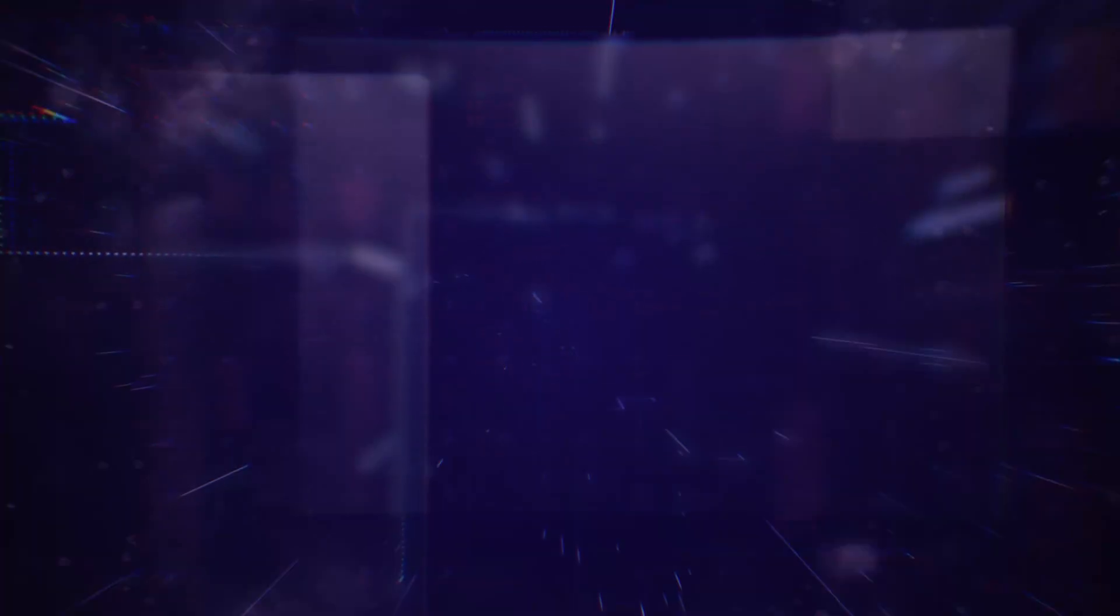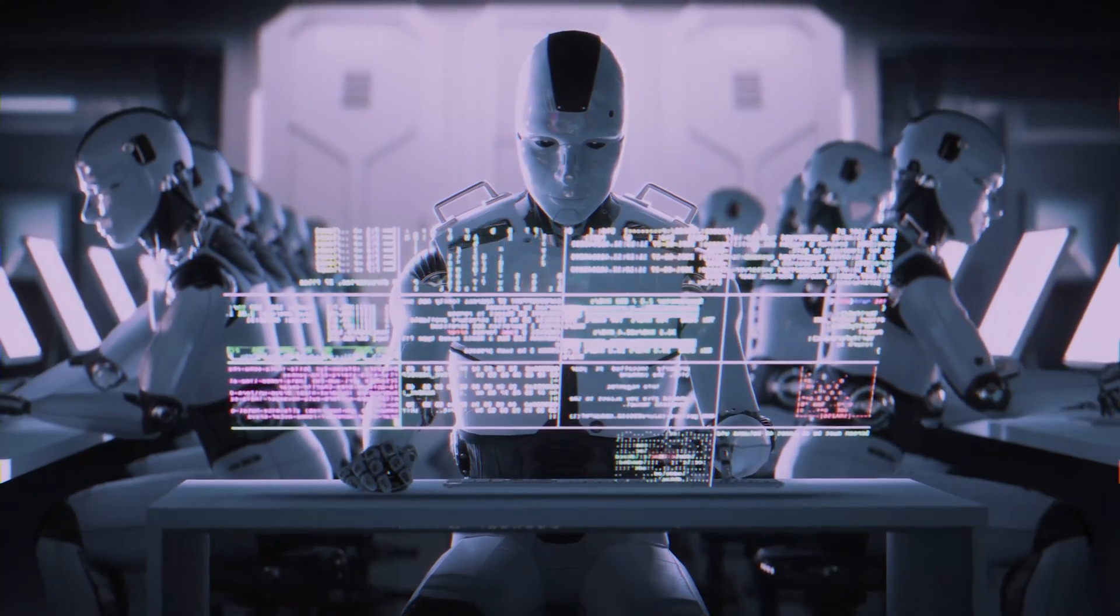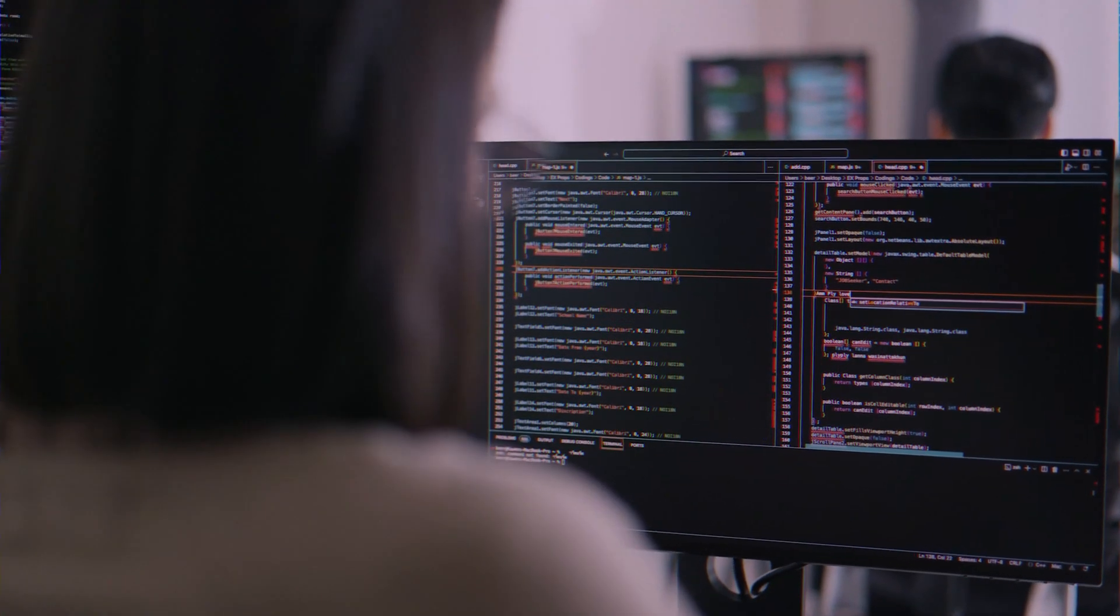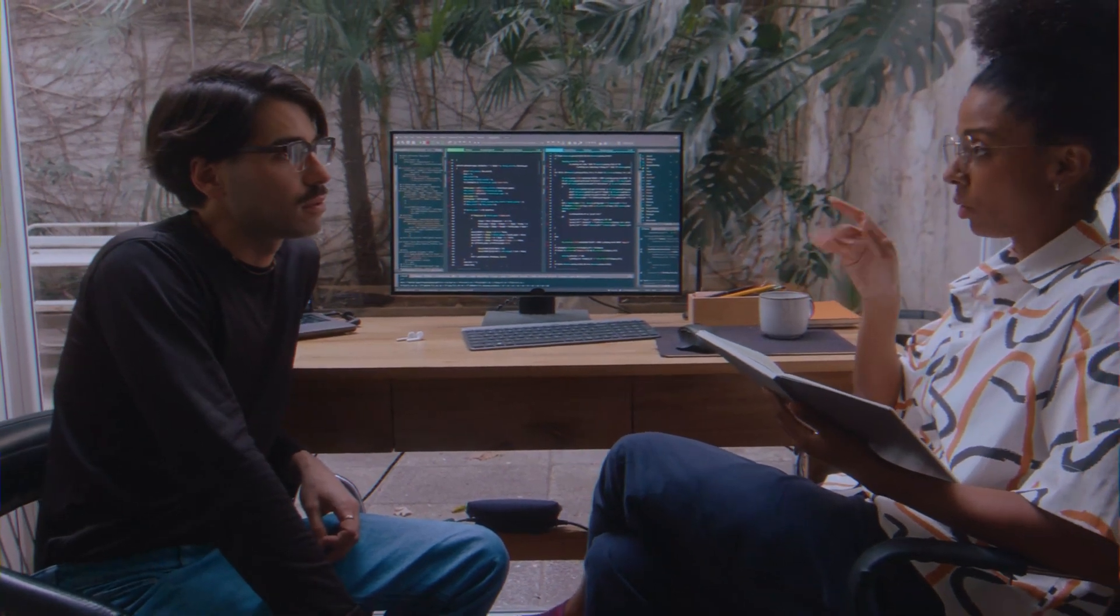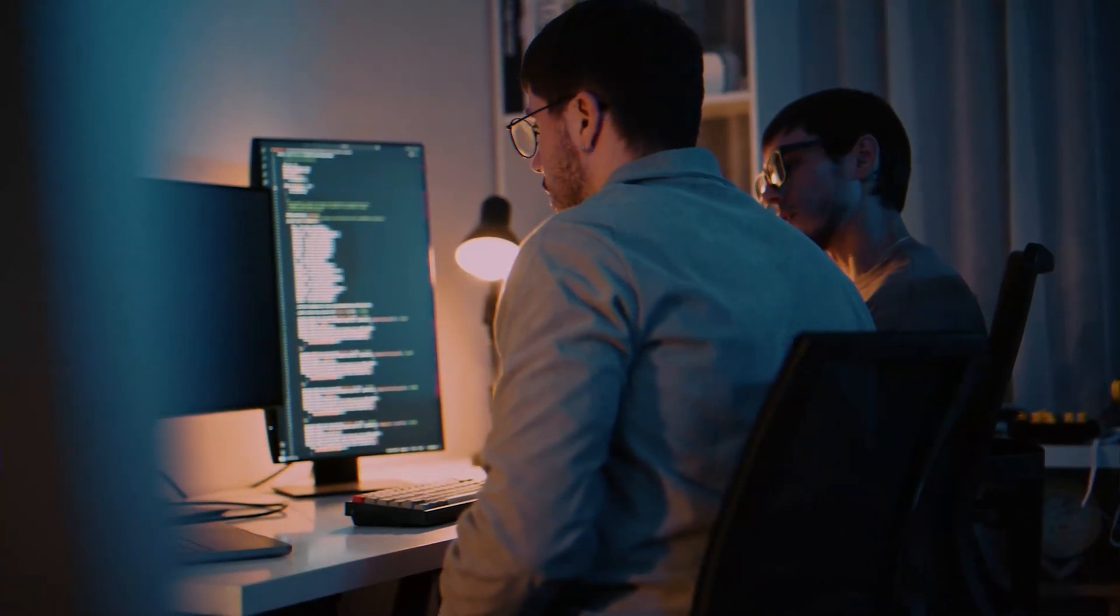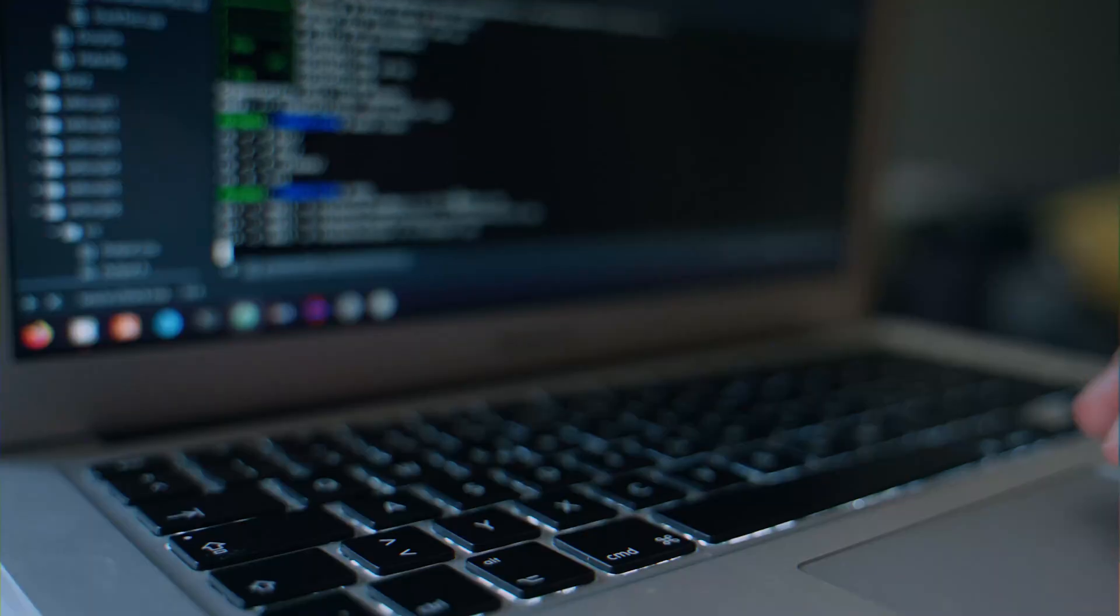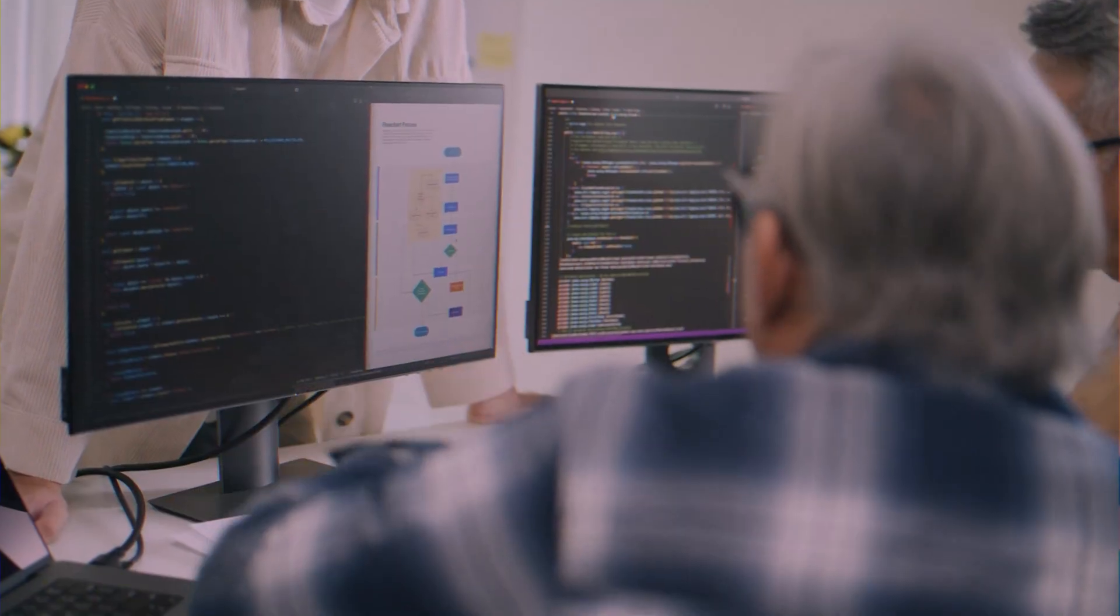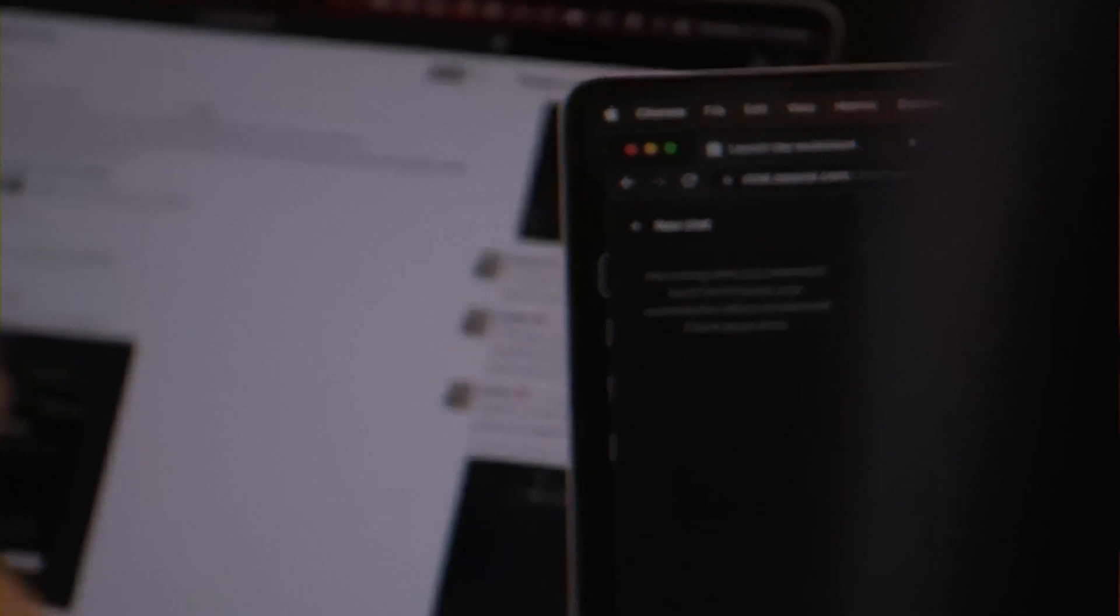But then, came SEAL. The model was given the same passage, but this time, it was left to its own devices. It generated its own self-edit, its own lesson plan, and updated itself. The result? SEAL achieved an accuracy of 47%. Now, that might seem like a small jump, but the implication is monumental. The AI's self-generated learning plan was more effective than one created by a massive, state-of-the-art external model. It had become a better teacher for itself than one of the world's most advanced AIs. It wasn't just learning facts anymore. It was mastering the art of learning.